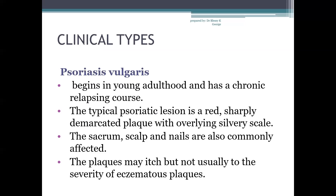The first type is psoriasis vulgaris, also known as chronic plaque psoriasis. It can occur at any age but most often begins in young adulthood and has a chronic relapsing course. The typical lesion is a red, sharply demarcated plaque with overlying silvery scale. Distribution is usually symmetrical, commonly involving elbows, knees, the sacrum, scalp and nails. The plaques may itch but not usually to the severity of eczematous plaques.